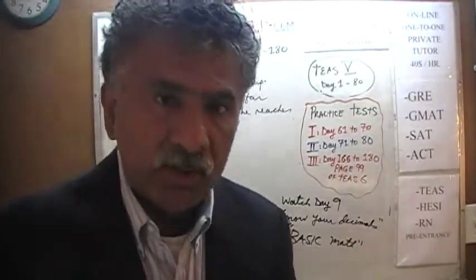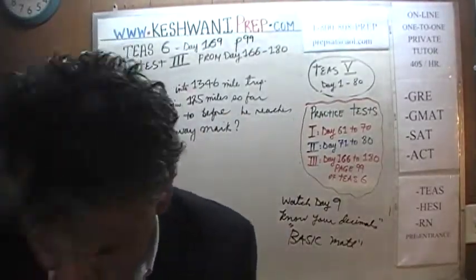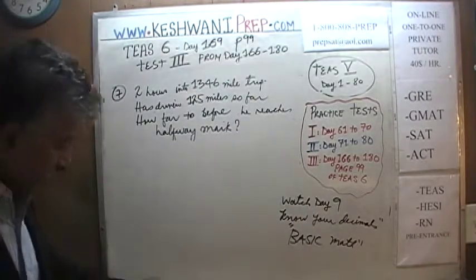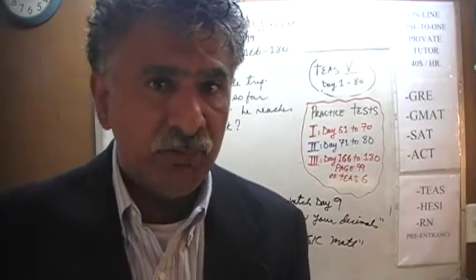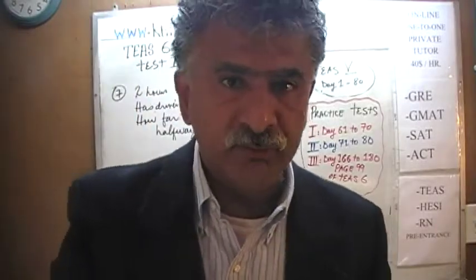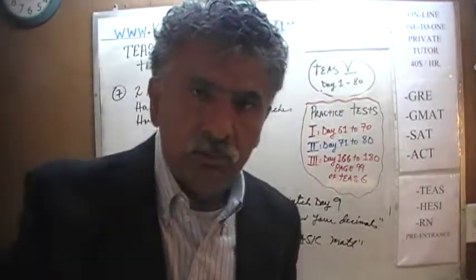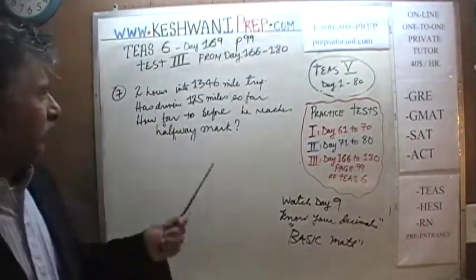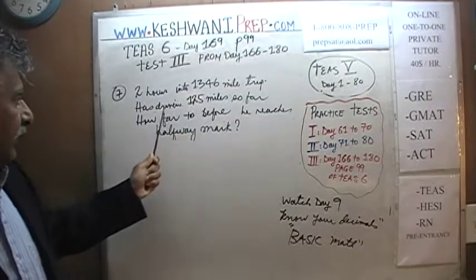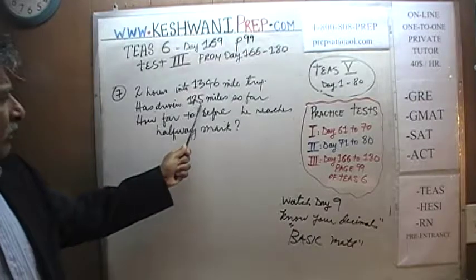Let's get going — question number seven. It's important that you have the book in front of you so you can read the problem yourself. The question says we have a truck driver who is making a trip that is 1346 miles long. We are told further that he has already driven 125 miles.